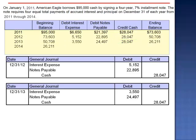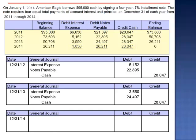For 2014, the beginning loan balance is $26,211, multiplied by 7%, giving interest of $1,836. The credit to cash is $28,047, and the reduction in the loan balance is $26,211, showing that the loan is fully paid off at the end of 2014. The journal entry debits interest expense $1,836, debits notes payable $26,211, and credits cash $28,047.